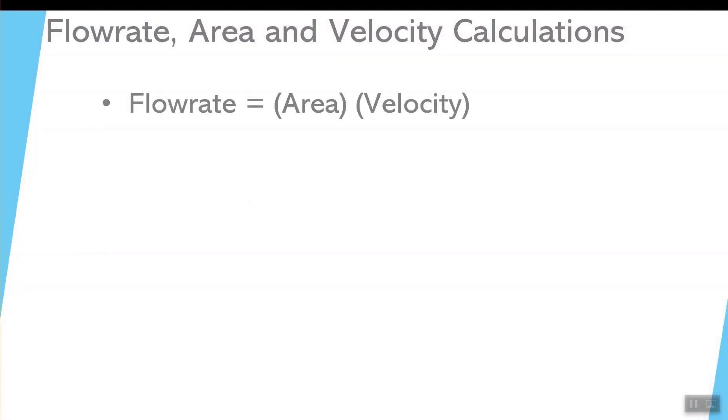Whenever we start off with these formulas, sometimes there's a lot of confusion as to what the names, what the terms mean. Now the variables in this formula are flow rate, area, and velocity. Well, what does that mean?